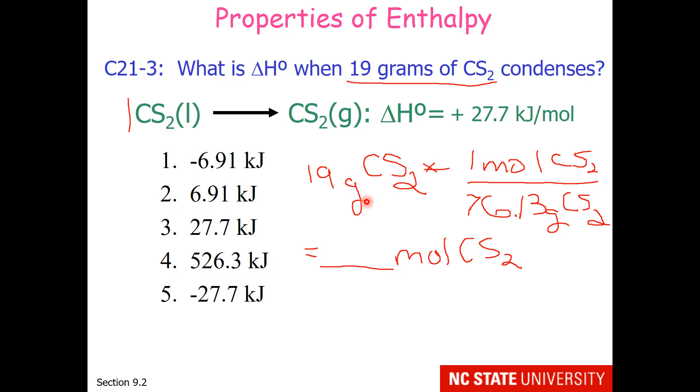So first, students would want to take the 19 grams of carbon disulfide and divide by the molar mass to get the number of moles of carbon disulfide. Next, students could take the moles of carbon disulfide and multiply them by this true ratio that says the enthalpy change at standard state is 27.7 kilojoules per mole. This would leave students with units of kilojoules.